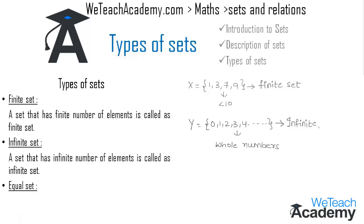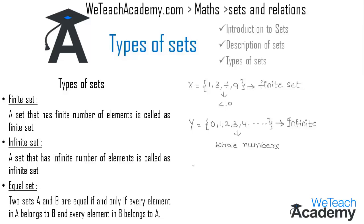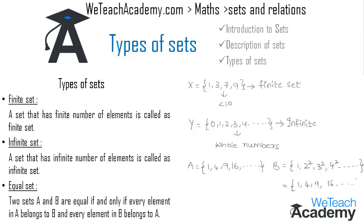An equal set is defined as follows: two sets A and B are equal if and only if every element in A belongs to B and every element in B belongs to A. For example, let A = {1, 4, 9, 16, ...} and B = {1², 2², 3², 4², ...}. Writing out B gives {1, 4, 9, 16, ...}. Since elements of A belong to B and elements of B belong to A, both sets are equal, that is A = B.